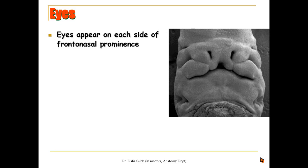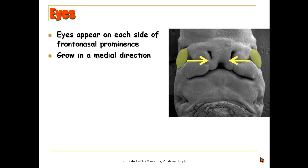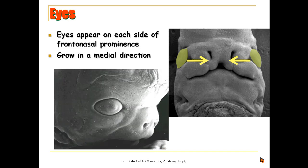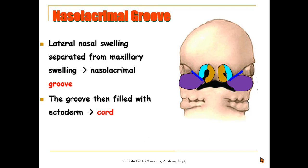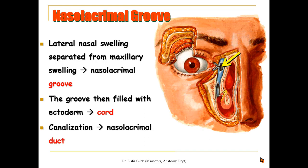For the eyes, initially there are two thickenings of the ectoderm called lens placodes, which appear on each side of the frontonasal prominence. They grow in a medial direction with the growth of the maxillary prominences and finally acquire their final position. There are also two grooves lying between the lateral nasal swelling and the maxillary swelling, extending obliquely from the angle of the eye downward — these are called the nasolacrimal grooves. Each groove is filled with ectodermal cells to form a cord that becomes canalized into the nasolacrimal canal, with its upper part forming the nasolacrimal sac and its lower part opening into the nasal cavity.